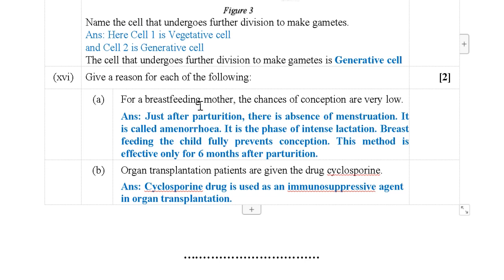Next question: Give a reason why for a breastfeeding mother the chances of conception are very low. The answer is that just after parturition there is an absence of menstruation, called amenorrhea. During intense lactation it is called lactational amenorrhea. Breastfeeding the child fully prevents conception. This method is effective only for six months after parturition.